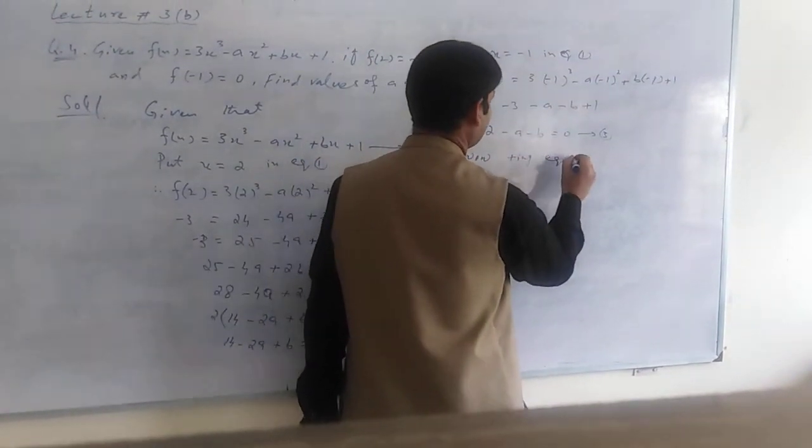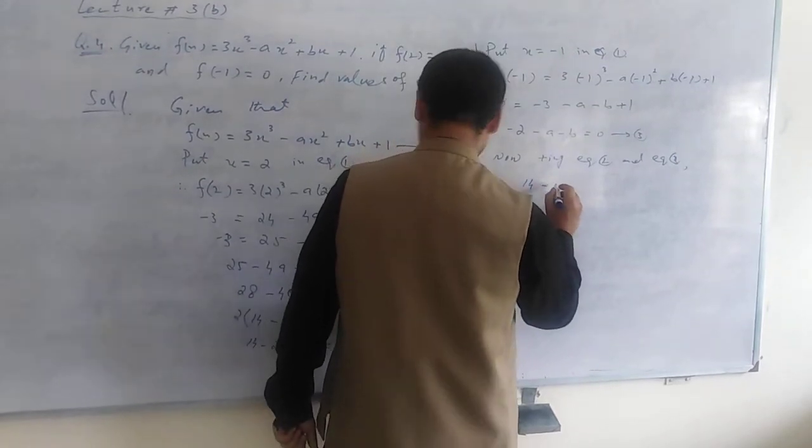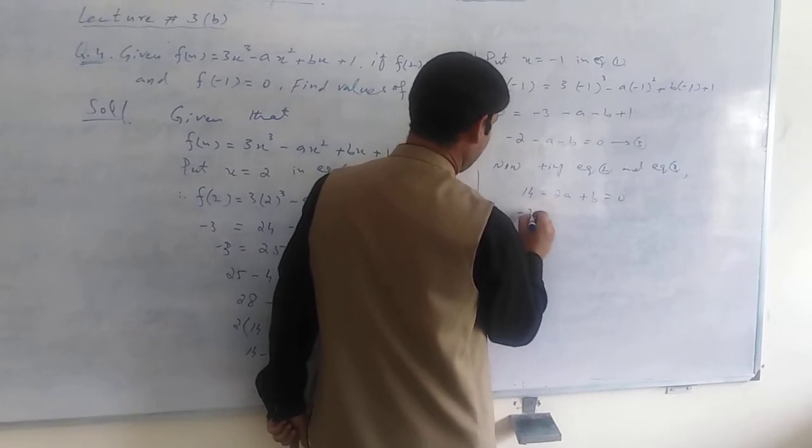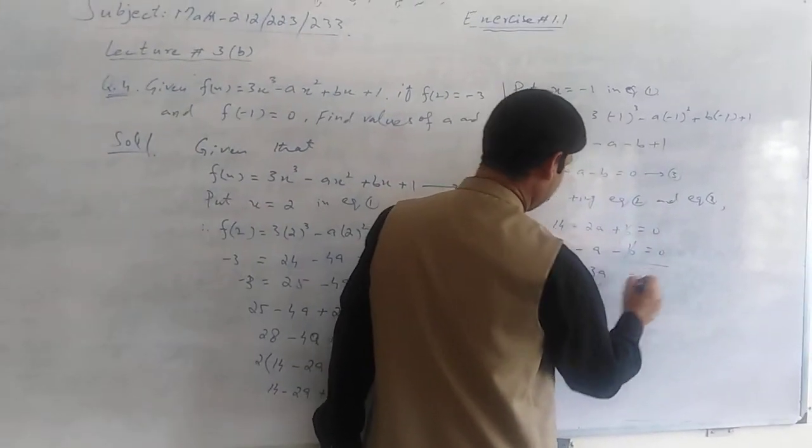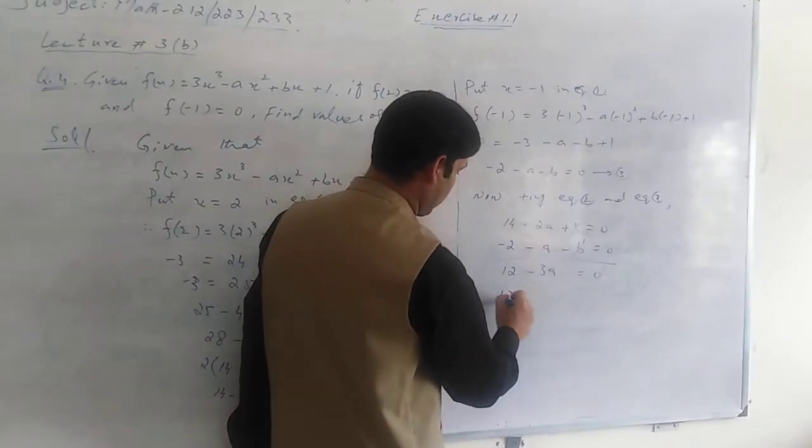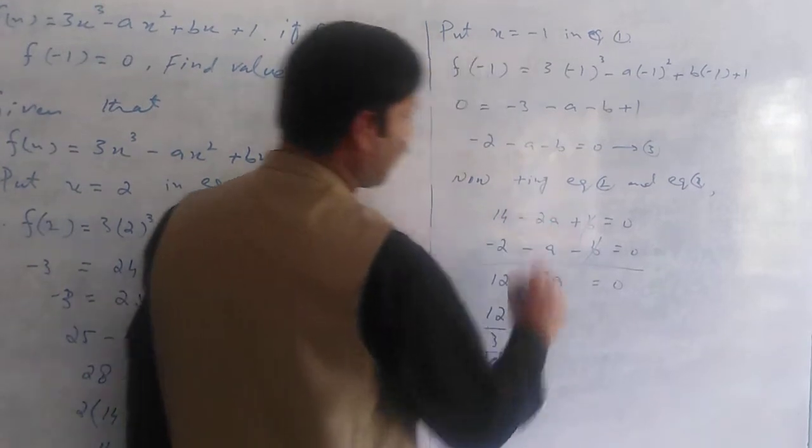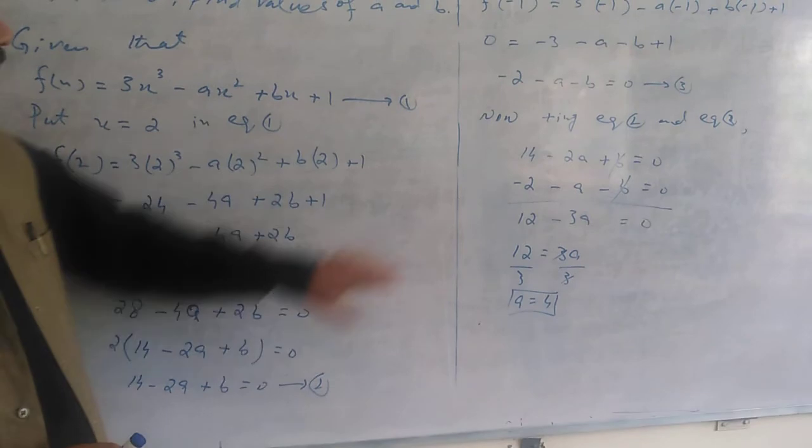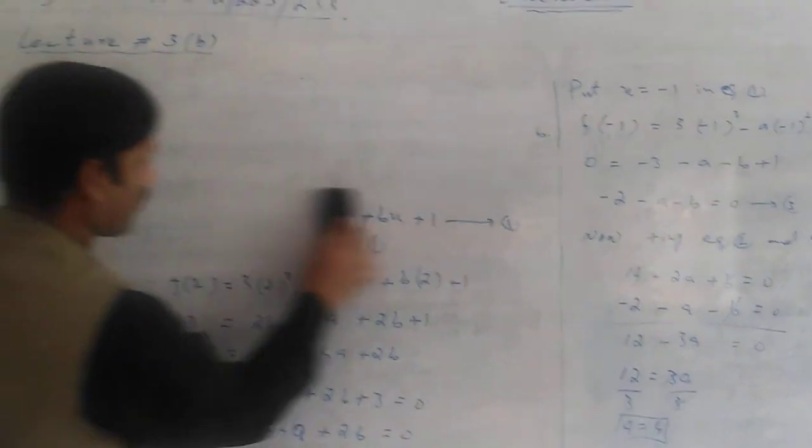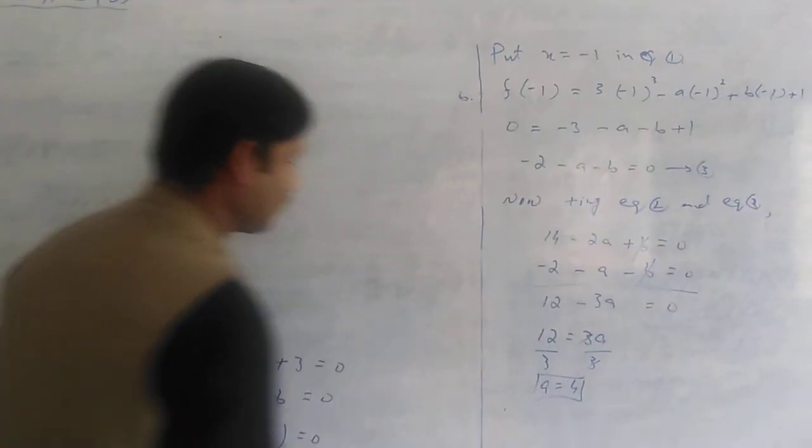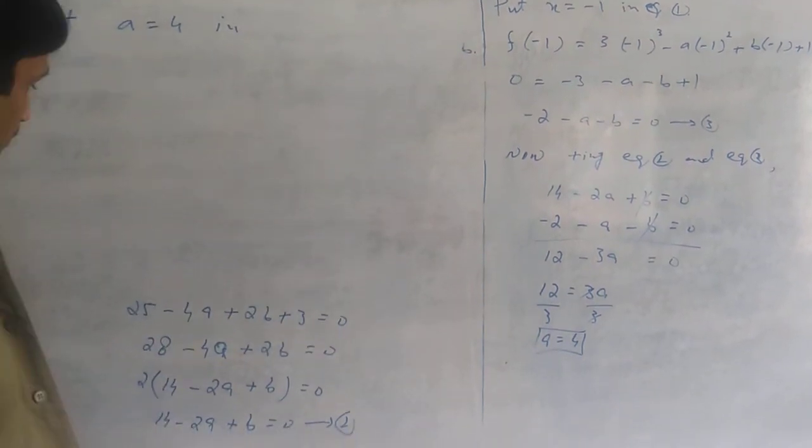Equation 2 and equation 3 are both linear equations. We can add because here b coefficient is plus 1, here b coefficient is minus 1. When we add it will eliminate b value and then we can find a value. Adding equation 2 and equation 3, we get 14 minus 2a plus b and minus 2 minus a minus b. b cancels. We get 12 minus 3a equals 0. Therefore a equals 4.